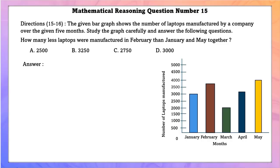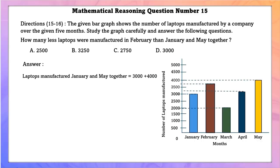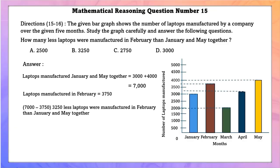Mathematical reasoning question number 15. The given bar graph shows the number of laptops manufactured over 5 months. How many fewer laptops were manufactured in February than in January and May together? Laptops in January and May together is 7,000; laptops in February is 3,750. So 3,250 fewer laptops were manufactured in February than in January and May together.